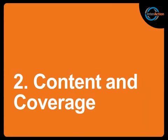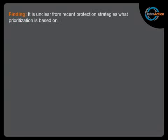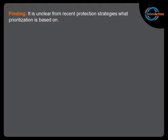Moving on to content findings. First: it's unclear from recent protection strategies what prioritization is based on. Priorities often come from multiple sources derived from what various stakeholders are already engaged in — not necessarily driven from a protection analysis. Priorities that go up to the HC from a protection cluster can sometimes be reshaped or rejected and alternative priorities imposed. Priorities are often based on assumptions and what agencies feel they can or cannot do.